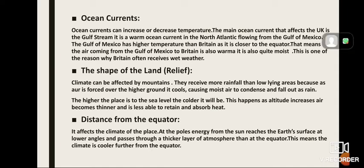Point three is distance from the equator, which affects the climate of a place. At the poles, energy from the sun reaches the earth's surface at lower angles and passes through a thicker layer of atmosphere than at the equator. This means that the climate is cooler further from the equator.